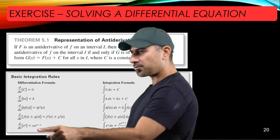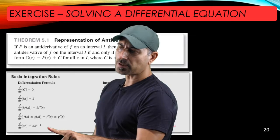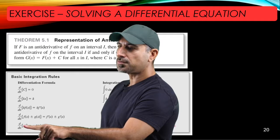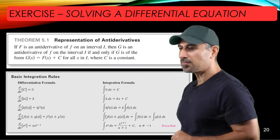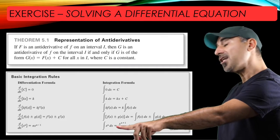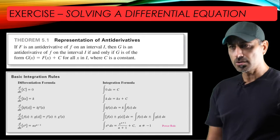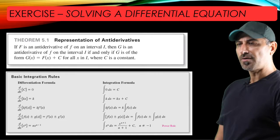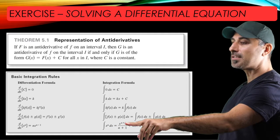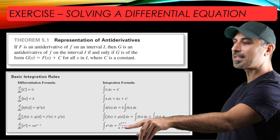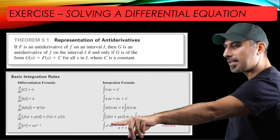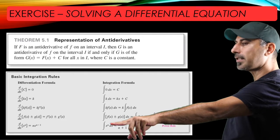Finally, the power rule — something we used a lot in the previous chapter. If you take the derivative of x^n you get n times x^(n-1). For integration, if you take the integral of x^n, you add 1 to the exponent and divide by the new exponent, and don't forget to add C.